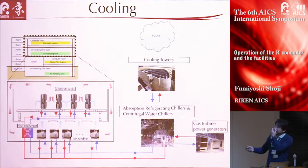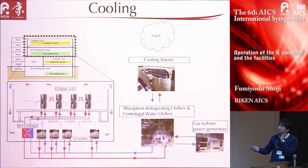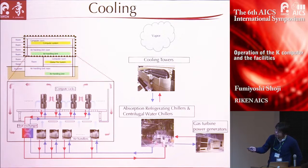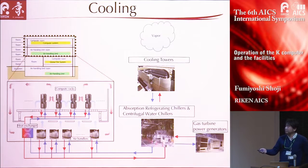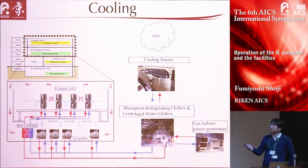This slide shows the cooling system as a cross-section view of the computer building. There are loops of air and loops of water. The water loop consists of two parts: one between the computer racks and the heat exchanger, and the other between the heat exchanger and the chillers. Energy consumed by the K-computer ultimately goes to the air from the cooling towers.